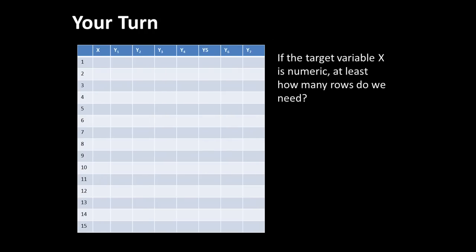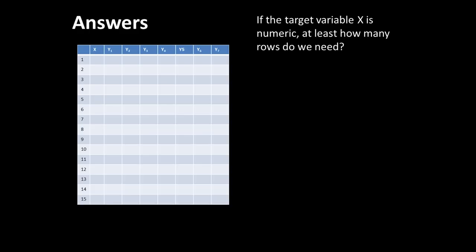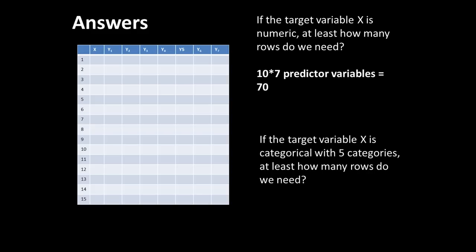Let's look at this once again. If the target variable is numeric, at least how many rows do we need? If the target variable is categorical with five categories, at least how many rows do we need? Pause the video and get your answer. Here, if it's numeric: 10 × P, and there are seven predictor variables, so 10 × 7 = 70 rows. If it's categorical with five categories: 6 × M × P = 6 × 5 × 7 = 210 rows at least. Of course, when you're doing a data mining exercise, having positive data is not going to be your issue — but for other kinds of statistical analysis, it's better to remember this rule.